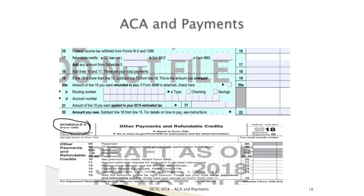Let's move on to the payment section — how we're going to cover those taxes. Line 16 represents an accumulation of all the federal tax withheld figures already input into the software. Line 17 covers our refundable credits. Line 17A represents the earned income credit. Information regarding the earned income credit is located in Publication 4012 Tab I. Earned income credit is tied to earned income, not unearned income. TaxSlayer figures that amount for us automatically. Publication 4012 page I-1 covers what is and is not earned income, along with common errors taxpayers make in claiming this credit.